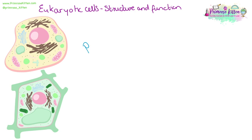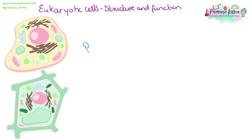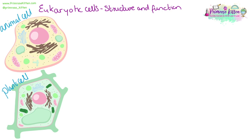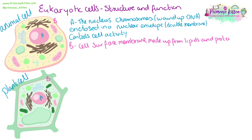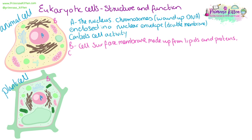You need to be familiar with all of the different structures within a eukaryotic cell, both plant cells and animal cells, and the function of all of those different organelles. Both plant cells and animal cells have a nucleus — this is where the chromosomes are located. The chromosomes are made up of wound-up DNA and it is enclosed within a nuclear envelope.